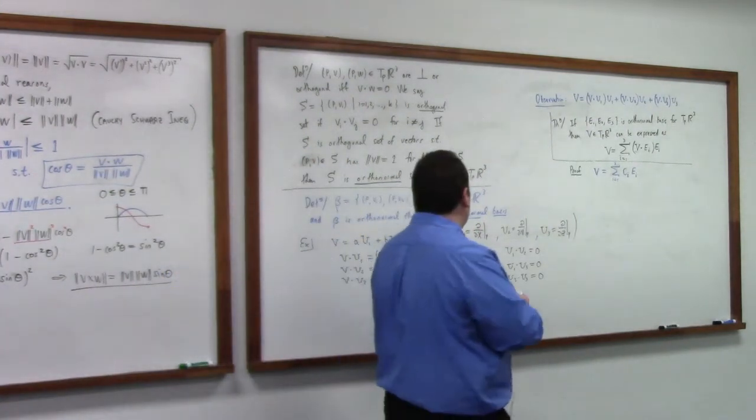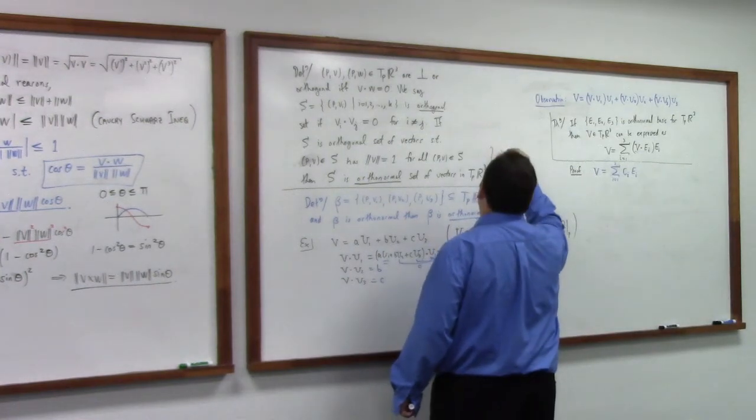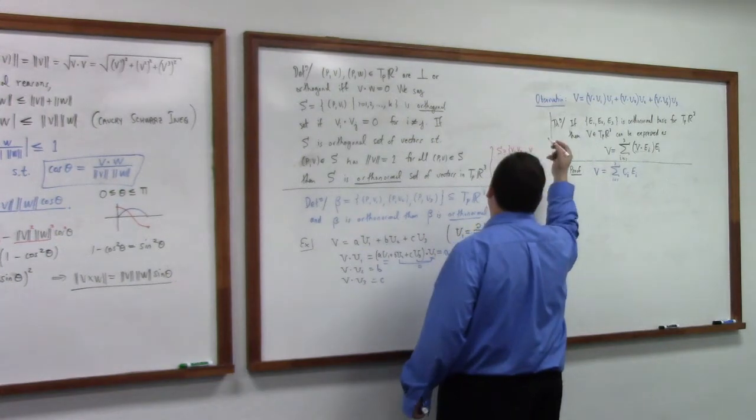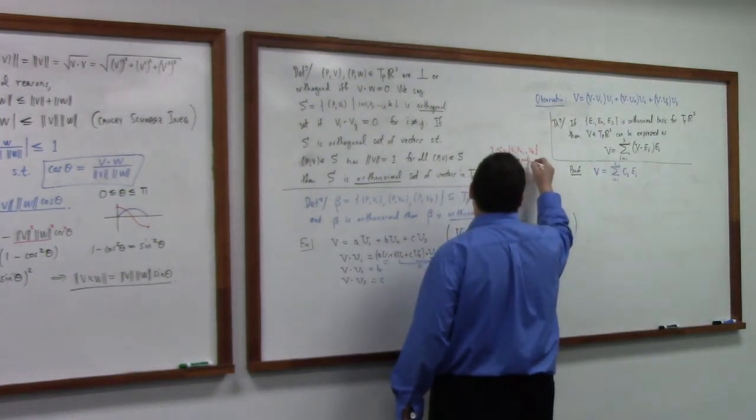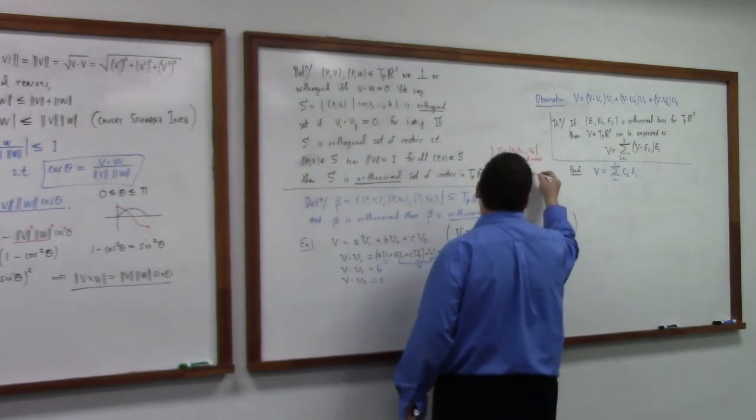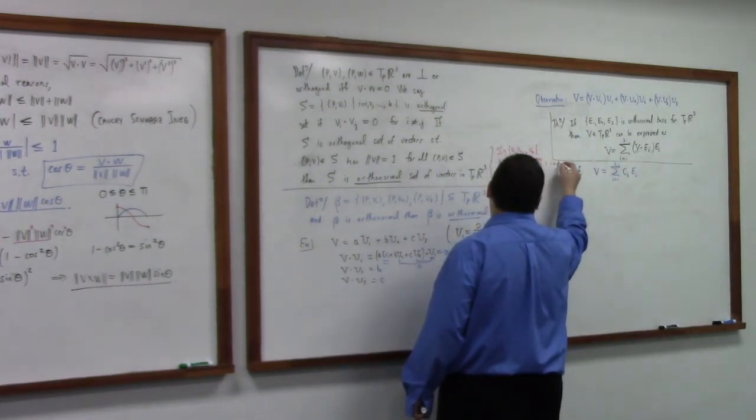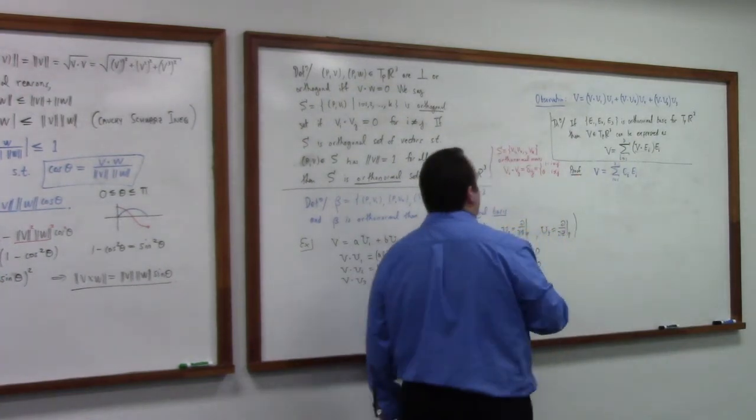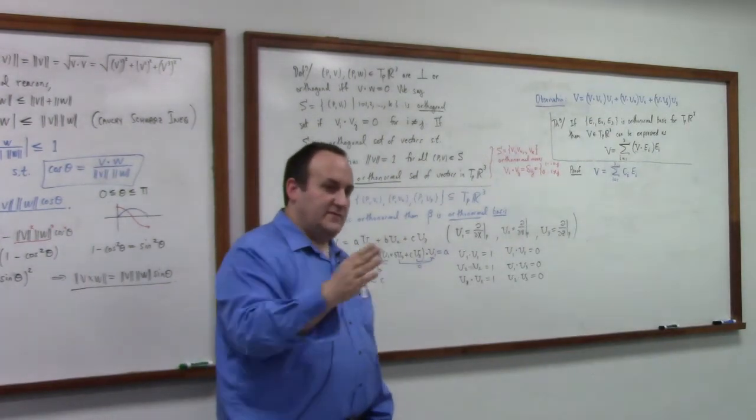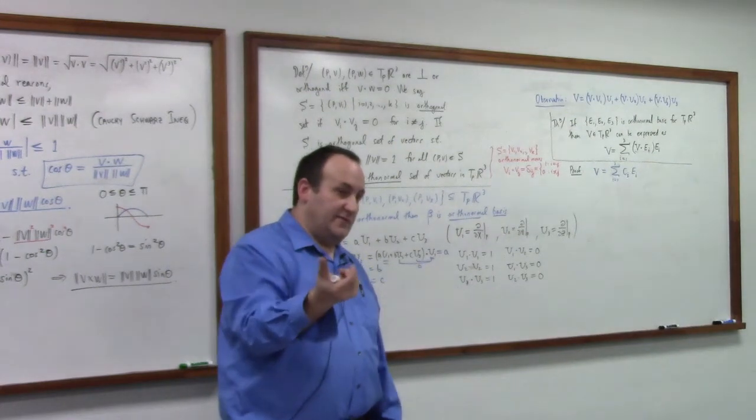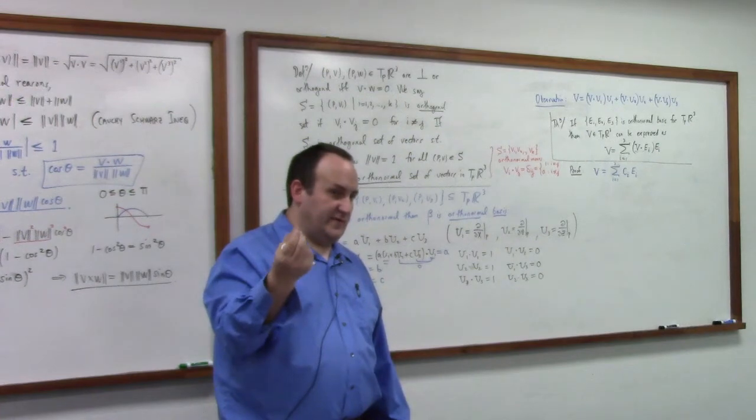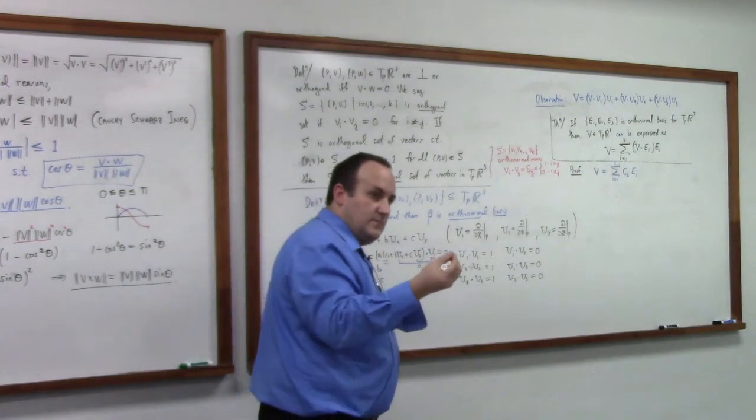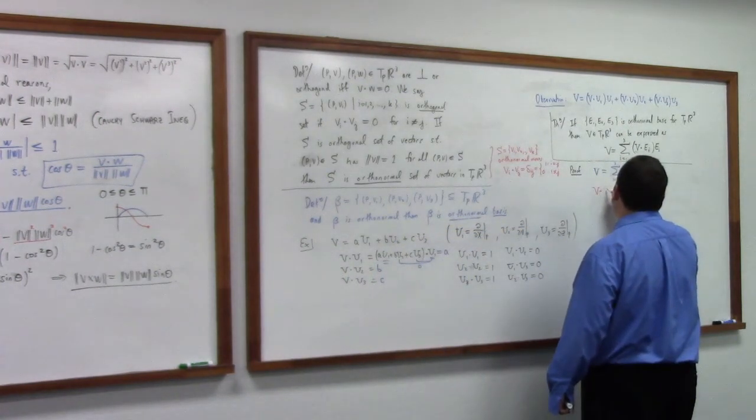So if this is an orthonormal basis, then that means, among other things, that we can write V, any V, as a sum of, let's say some constants, let's say C sub I, e sub I, for the sake, just to give us a transitional notation for this proof, I equals one to three. Right. Something I neglected to say but I really should have is orthonormal set of vectors, there's a really nice simple formula for that. So what this means, if you have S is equal to like V1, V2, however many you like, VK, then orthonormal means that VI dot VJ is Kronecker delta IJ, which is one if I is equal to J and zero if I is not equal to J. So like that, that's my go to way of thinking of orthonormal.